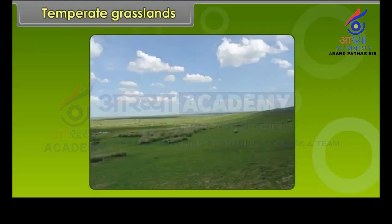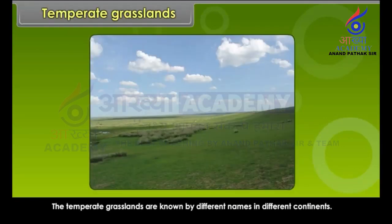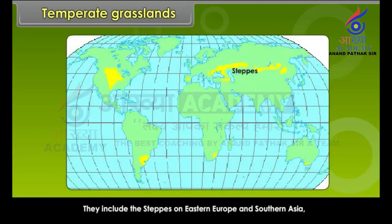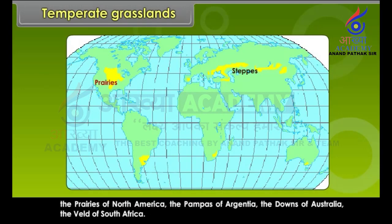The Temperate Grasslands are known by different names in different continents. They include the steppes of Eastern Europe and Southern Asia, the Prairies of North America, the Pampas of Argentina, the Downs of Australia, and the Veld of South Africa.